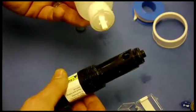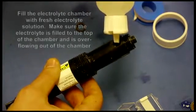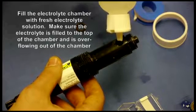While the wood ring is absorbing the electrolyte solution, pour the electrolyte solution into the sensor and go all the way to overflow.